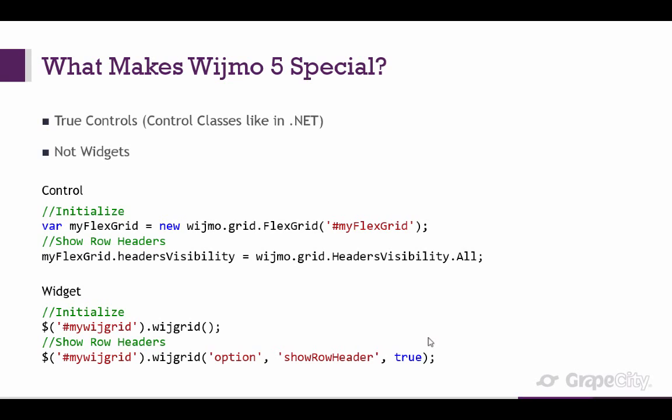So what makes Widgmo 5 special? The most important thing is that we have true controls. We write controls as classes, just like we do in .NET. They're not widgets. Previously we had extended jQuery UI and followed the jQuery widget factory pattern. It was a great library to build upon when we first created Widgmo, but we knew there was a better way — from our experience with really powerful frameworks like .NET. We wanted to build similar controls with similar APIs in JavaScript, and we set out to do that.